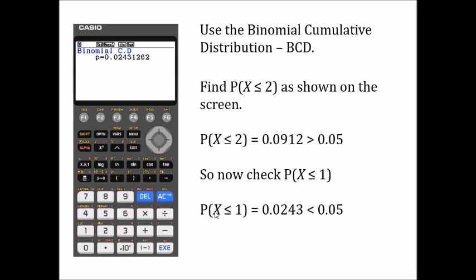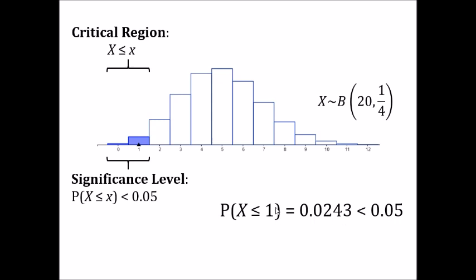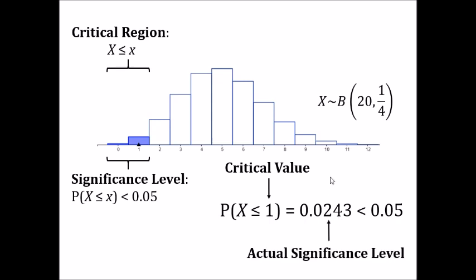Go back to your binomial CDF function and this time use an upper value of 1, everything else stays the same. You should find it comes out to be 0.0243 — clearly below 5%. So even though x equals 2 might be closer to 0.05, x less than or equal to 1 is actually our critical region, with 1 being the critical value. The actual significance level is 0.0243, or 2.43%, and it always has to be less than 5%.